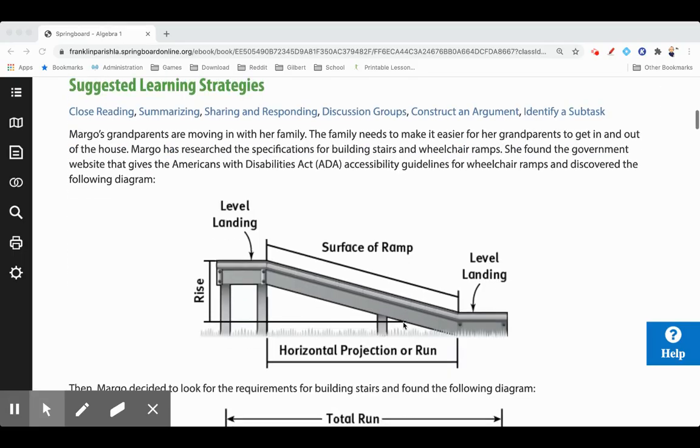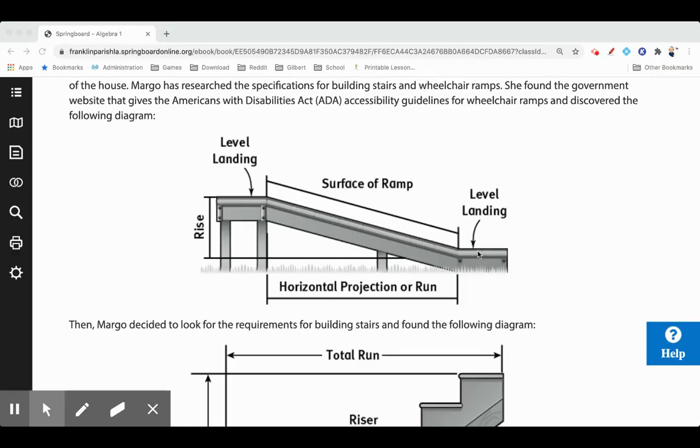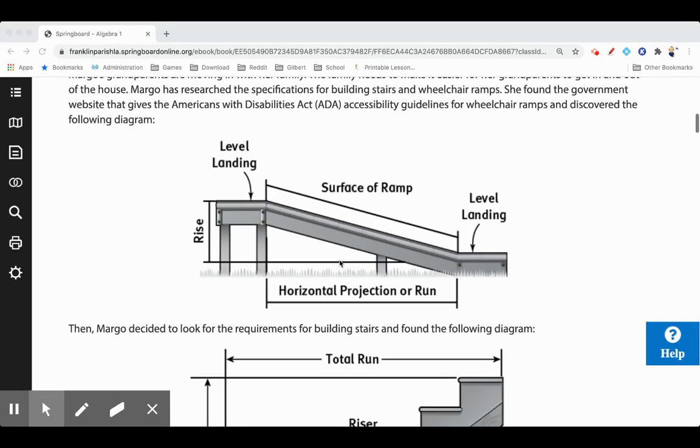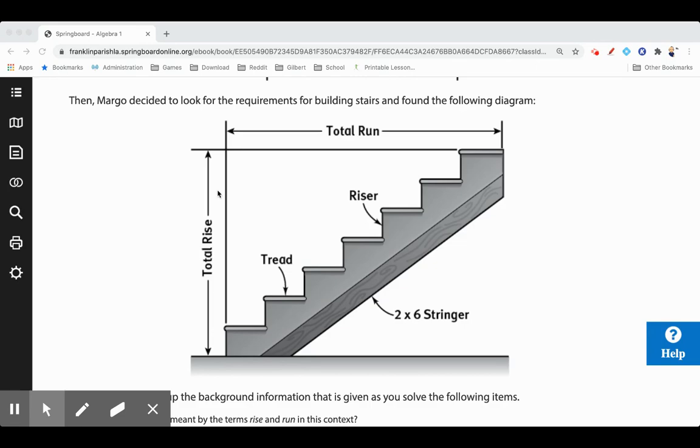Margo's grandparents are moving in with her family and she's going to make a wheelchair ramp for them. You can see that it's this far off the ground from one level to the next and that far apart. She found another picture for stairs, rise, run, rise and run.